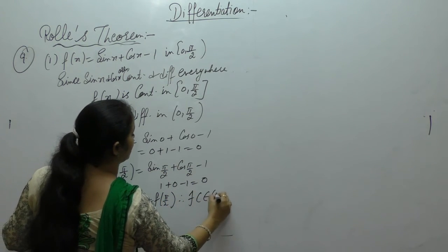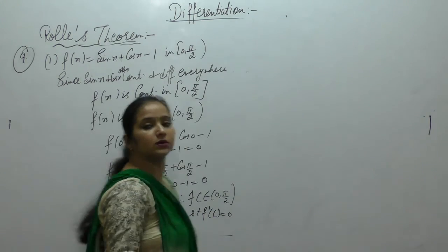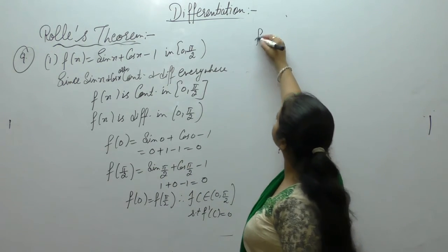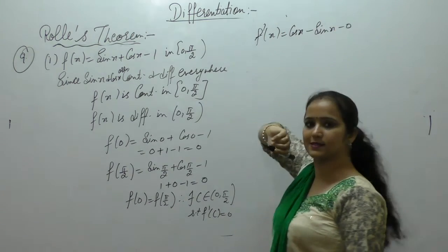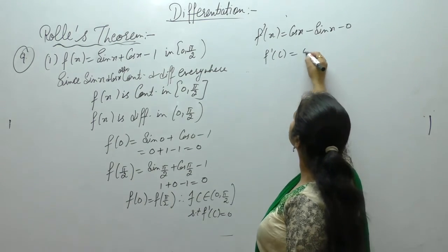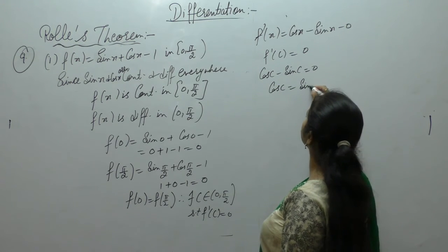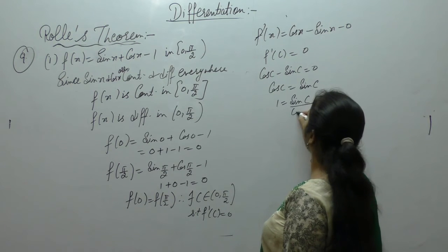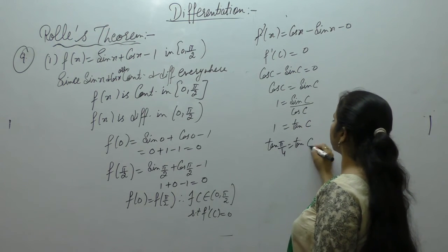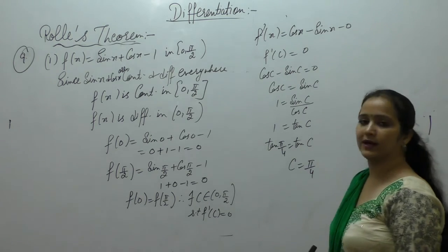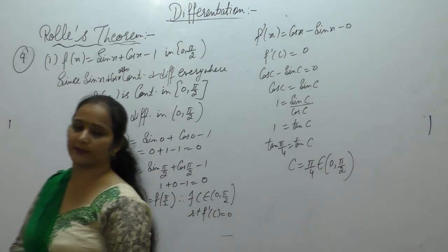Therefore there exists c in (0, π/2) such that f'(c) = 0. f'(x) = cos x - sin x. Setting cos c - sin c = 0, we get cos c = sin c, so tan c = 1, giving c = π/4. Since π/4 lies between 0 and π/2, Rolle's theorem is verified.